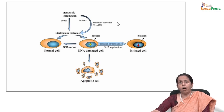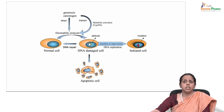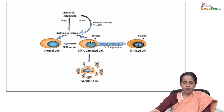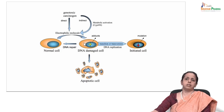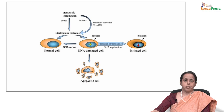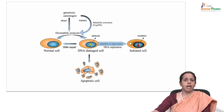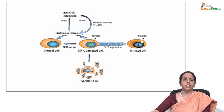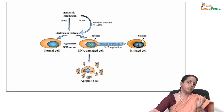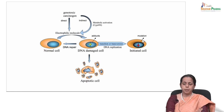Chemical carcinogens may directly or indirectly be converted to electrophilic molecules that interact with your DNA. Depending on the level of cell injury — the formation of DNA adducts — different cellular responses may occur. With low damage levels, the repair systems will come into play, or cells can undergo programmed cell death like apoptosis. However, under cellular replicative pressure, if the damaged DNA goes through replication, the mutation will be fixed — thus initiated cells carry permanent and heritable DNA changes that predispose to cancer development.